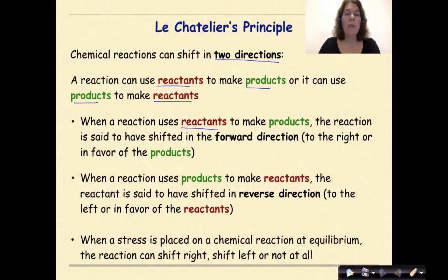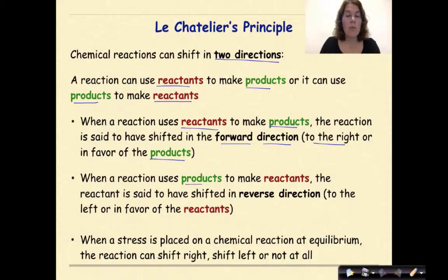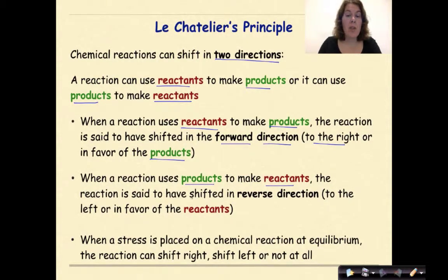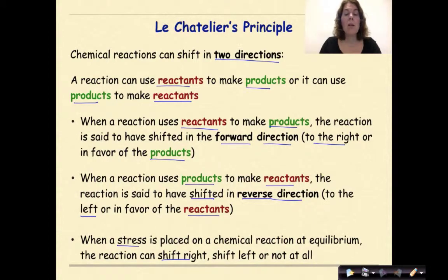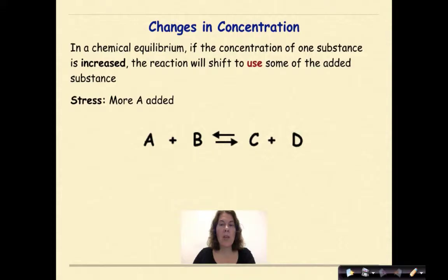When a reaction uses reactants to make products, the reaction is said to have shifted in the forward direction, otherwise known as to the right or in favor of making products. When a reaction uses products to make reactants, the reaction is said to have shifted in the reverse direction, in other words to the left, or in favor of the reactants. When a stress is placed on a chemical reaction at equilibrium, the reaction can shift right, shift left, or not at all. Let's focus on changes in concentration.